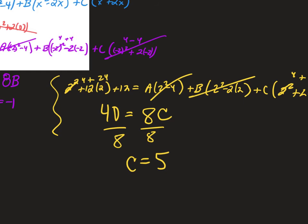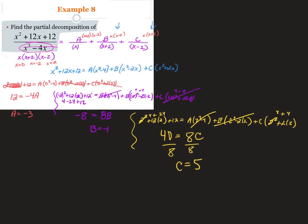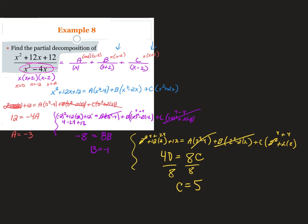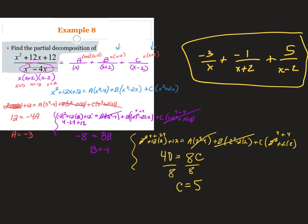Plugging the values in: A is negative 3, B is negative 1, C is 5. The answer is negative 3 over x, plus negative 1 over (x plus 2), plus 5 over (x minus 2). I won't give you a problem this long on the quiz — we only do up to quadratics. This is a cubic, but I wanted to show you the full process.